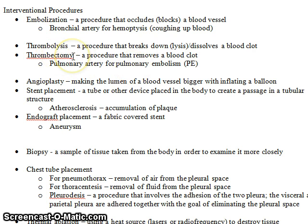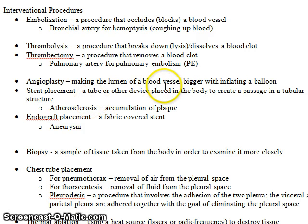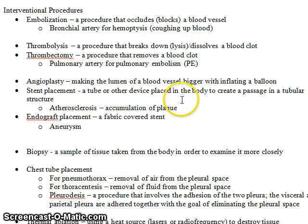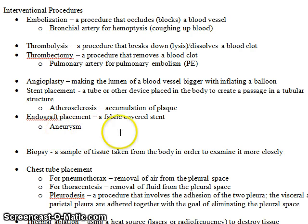Thrombectomy is the actual removal of a blood clot — an example would be a pulmonary artery procedure for pulmonary embolism. Angioplasty is making the lumen of a blood vessel bigger by inflating a balloon. A stent is a tube or device that creates a passage in a tubular structure. Atherosclerosis is the accumulation of plaque and is the cause of many diseases. An endograft is essentially the same as a stent but has a fabric covering, most commonly used for an aneurysm such as in the aorta.